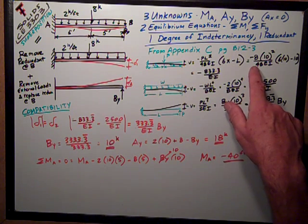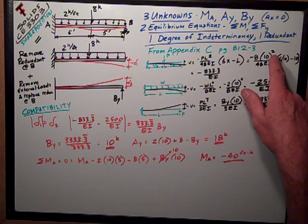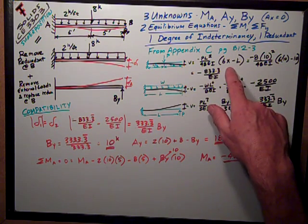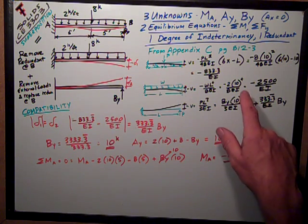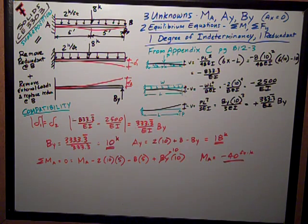So, substituting real numbers, my numbers are I have 8 kips. The beam is 10 feet long. Square it, divided by 48 EI. And X is 10 also. So, this expression evaluates out to negative 833.3 repeating over EI.